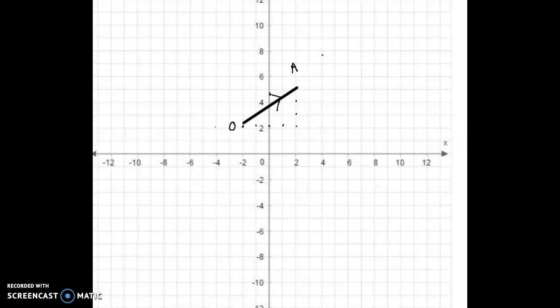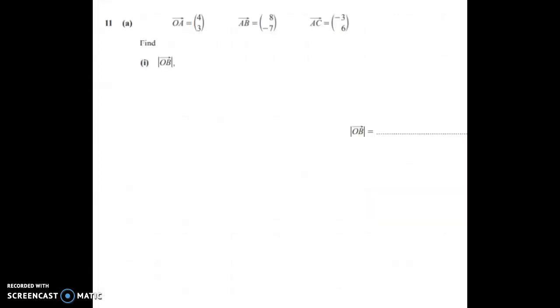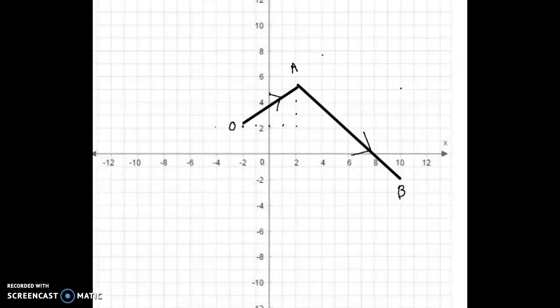Now we're going to go from, let's go back here. Now we're going to do AB, and then we're going to determine what the length of OB is. So for AB, we're going to go right 8, down 7. We have AB drawn, so now we have to determine what the length is from O to B.